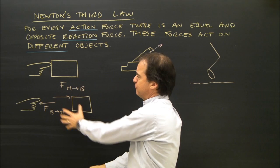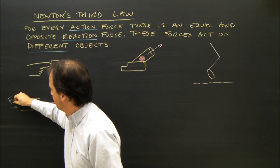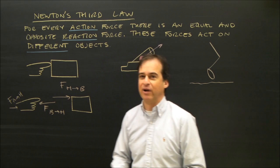If I want to know what the book is doing, I look at the forces on the book. If there's a force of two newtons on the book, the book can accelerate to the right. I look at my hand, and there's a force of two newtons to the left on my hand, but I've got the force of my arm on my hand pointing to the right.